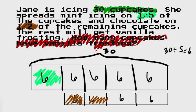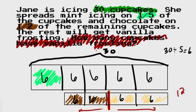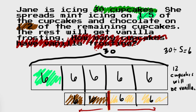Half of the remaining cupcakes are going to be chocolate — so we have six here and six here. What is going to be vanilla? Vanilla is going to be just what's left. We split the remaining in half: this half gets chocolate, this half gets vanilla. And now we are left with 12 cupcakes. So 12 cupcakes are going to get vanilla. Since it's a word problem, we want to make sure we write that: 12 cupcakes will be vanilla.